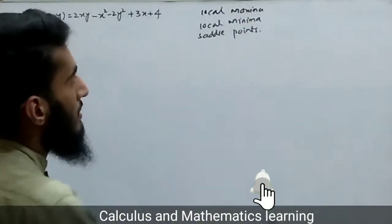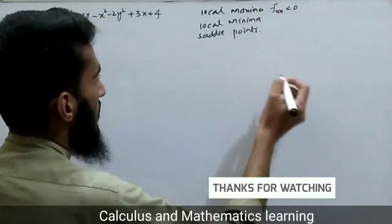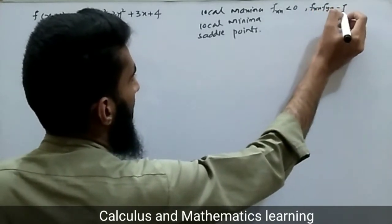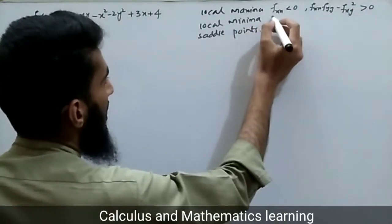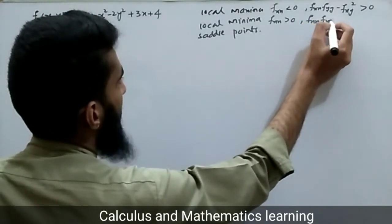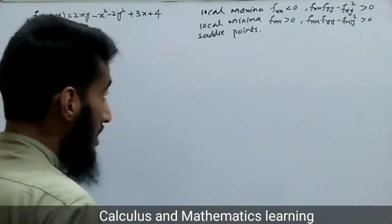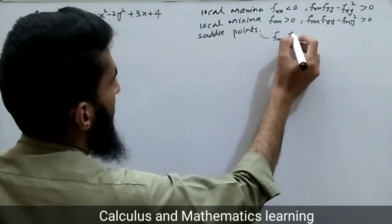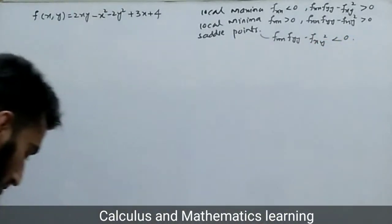The condition for local maximum is that fxx should be less than zero, while fxx·fyy minus fxy squared should be greater than zero. For local minima, fxx should be greater than zero and fxx·fyy minus fxy squared greater than zero. The condition for a saddle point is that fxx·fyy minus fxy squared should be less than zero.